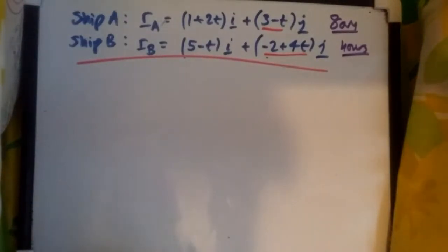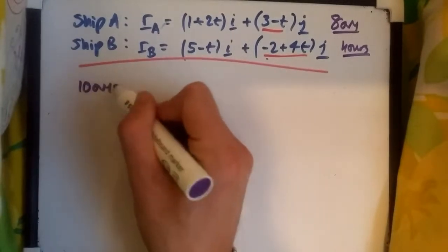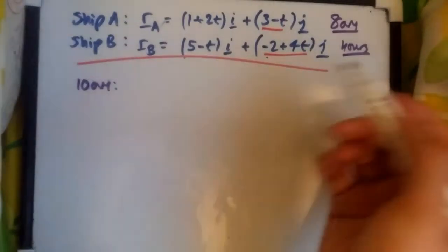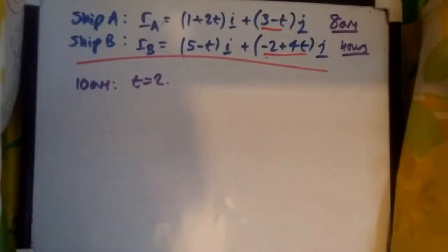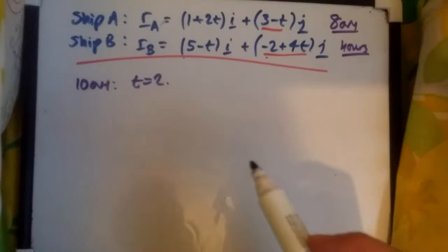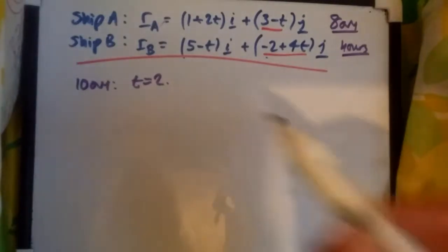Suppose we want to find the distance between these two ships at 10 a.m. At 10 a.m., this means this is two hours later, so we want to find the value of t equals 2. Putting in t equals 2 will give us the position vector of A and B exactly at 10 a.m.